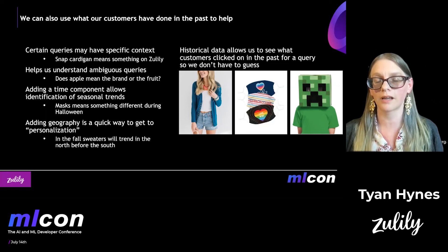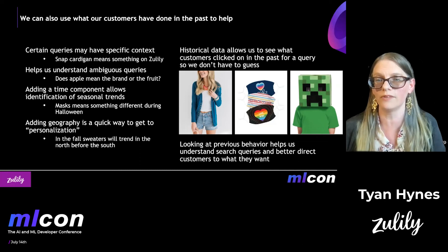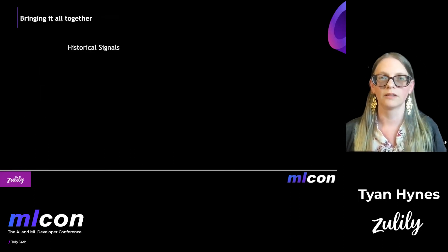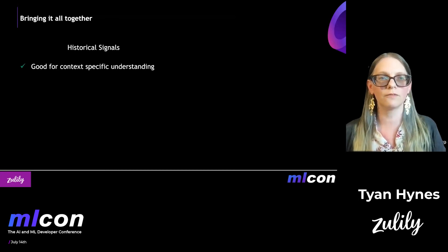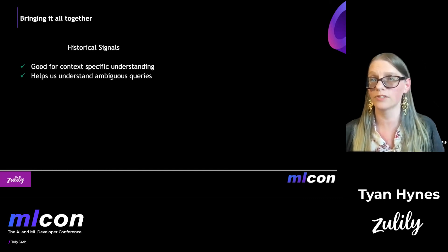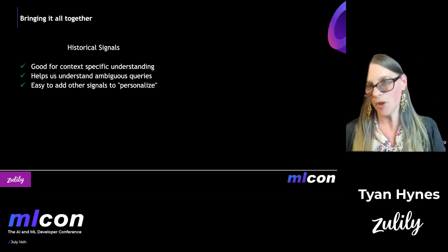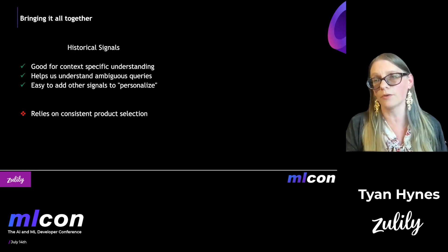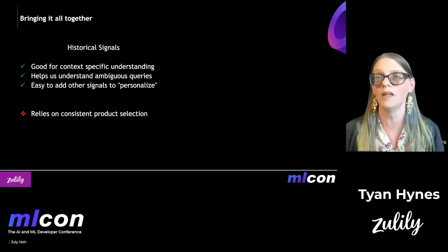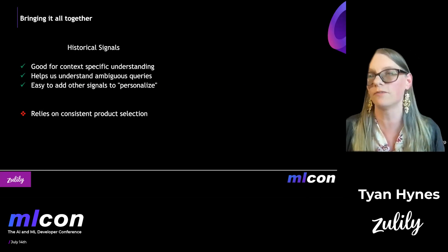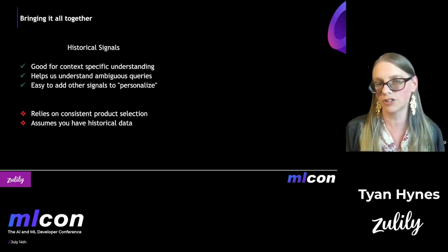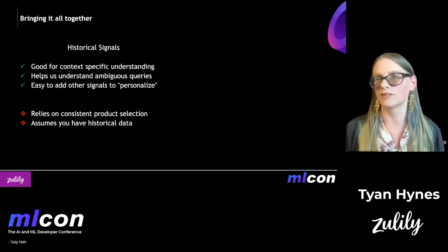Historical clicks allow us to see what customers have clicked on in the past, so we don't have to guess what they mean. Looking at previous behavior helps us understand search queries and better direct customers to what they want. To summarize: historical signals are great for context-specific understanding and ambiguous queries, and it's easy to add other signals for personalization. But it relies on consistent product selection — if your catalog is changing, that can be a real challenge. It also assumes you have historical data, so if you haven't been collecting data or if you're a brand new site, historical signals won't necessarily be helpful.